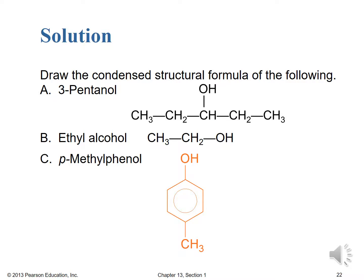For 3-pentanol, draw the five carbons of pentane and place the OH on the middle carbon. For ethyl alcohol, draw the ethane group with an OH attached — it doesn't matter which carbon since that one automatically becomes carbon 1. For para-methylphenol, draw benzene with an OH group, then place a methyl CH3 group at the para (1-4) position directly opposite the OH.